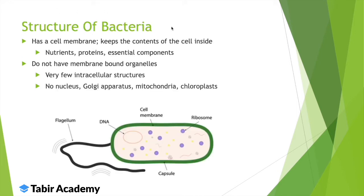Let's look at the structure of bacteria. Bacteria is a cell with a membrane, which contains DNA. DNA is of two types: one is chromosomal DNA, which is not in a nucleus — it floats in the cell. The other is circular DNA, which we call a plasmid. There are no membrane-bound organelles in the cells; there are only ribosomes, nutrients, proteins and essential components.